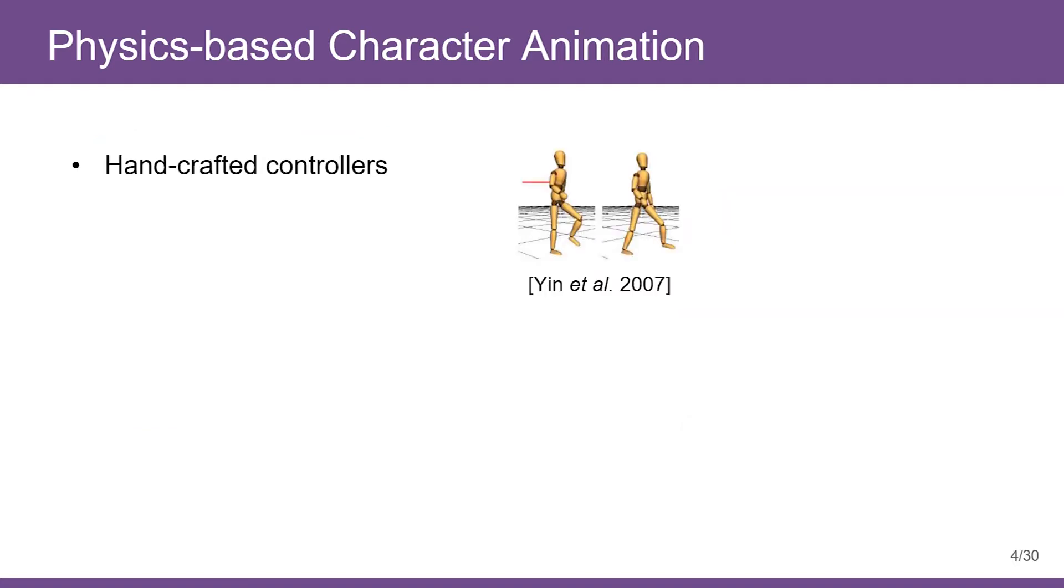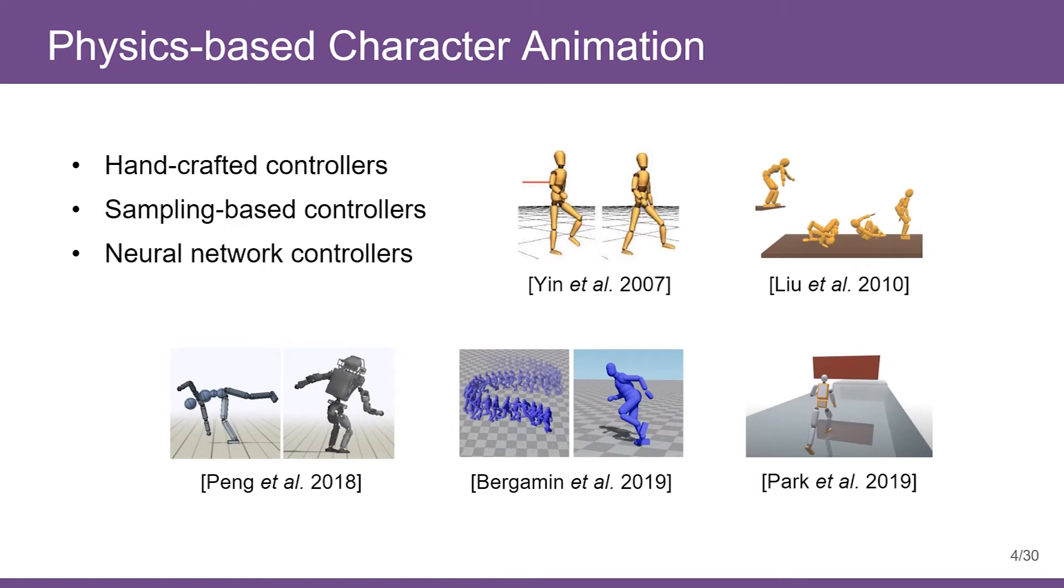Physics-based character control techniques have made significant progress in recent years, from hand-crafted controllers such as Symbicon to sampling-based controllers like Semcon, then to neural network controllers able to track motion capture data, including DeepMimic and models trained from kinematic motion generators.